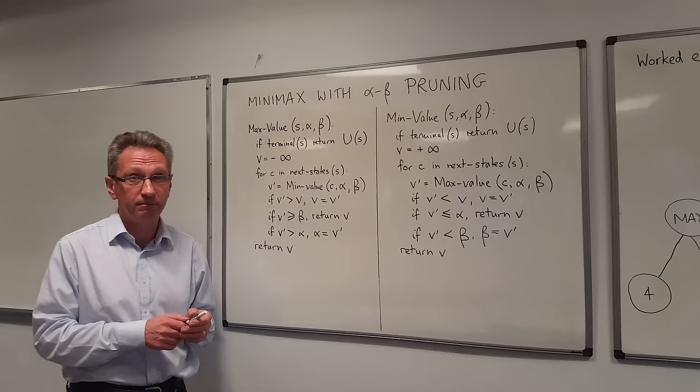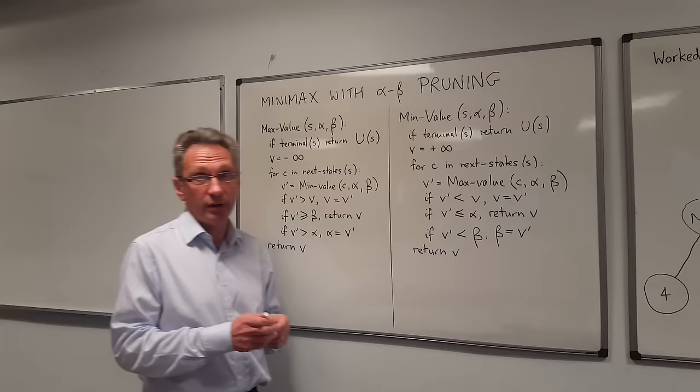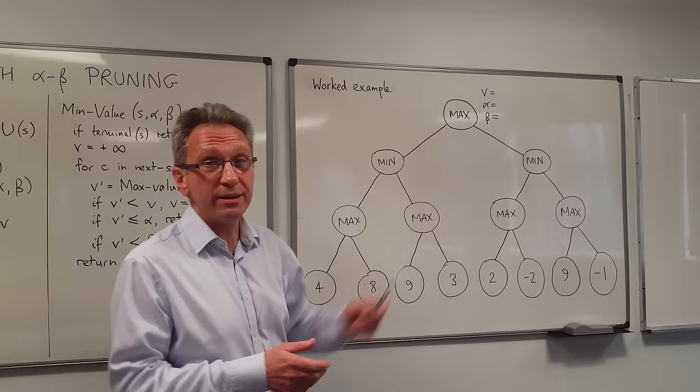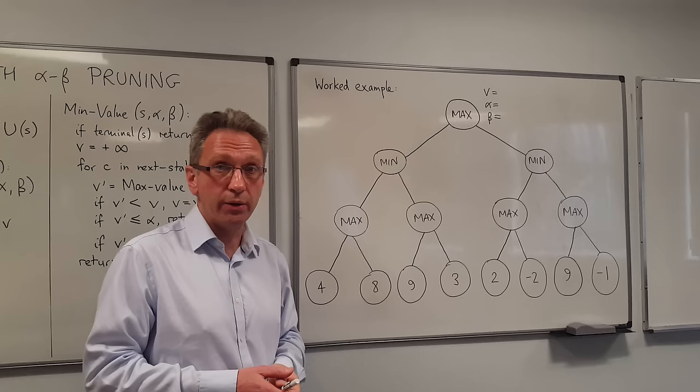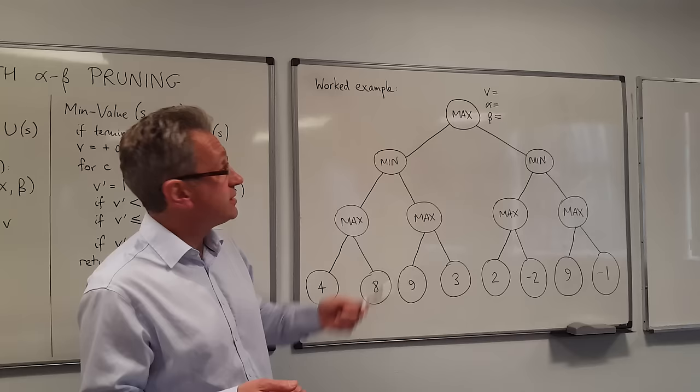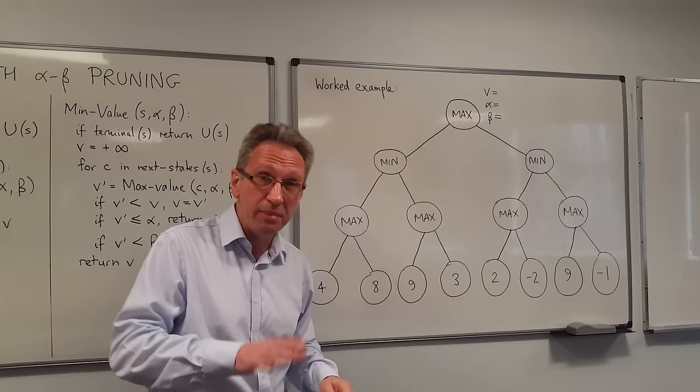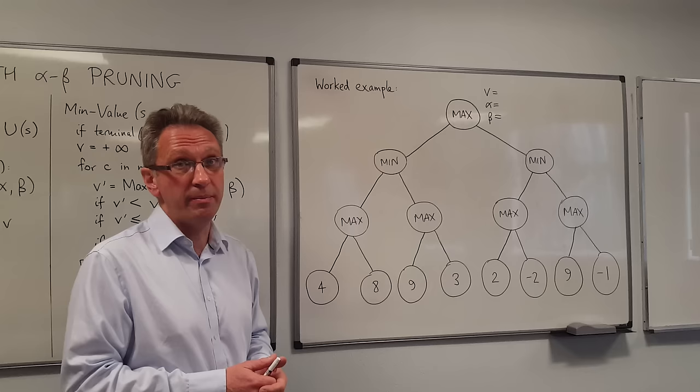The Minimax algorithm works with a game tree, something like this one here. You've got two agents, one is called Max and one is called Min. Max is trying to maximise the reward of the game — there's going to be a score at the end of the game that we call the utility — and Max is trying to maximise that reward. Conversely, Min is trying to minimise that reward, so Min is trying to keep the reward as low as possible for Max.